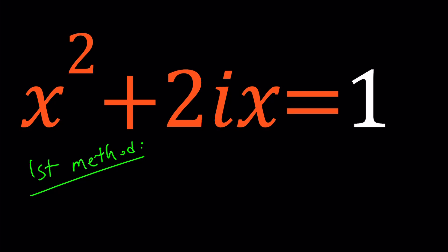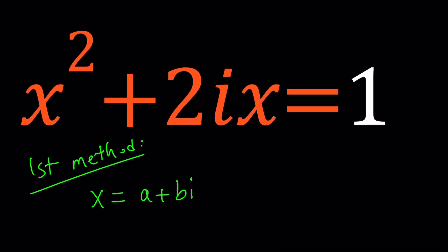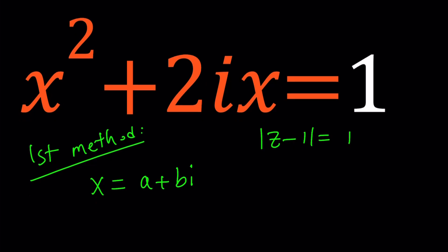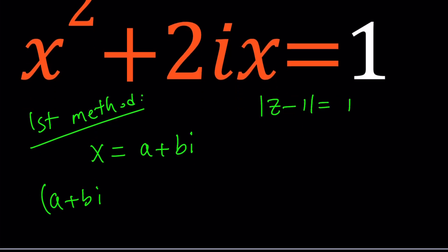That's why I'm going to assume that it takes the form a plus bi because that's how you write a complex number, right? Great. So now we're going to replace x with a plus bi, and this is a general technique actually that's used for solving equations for complex numbers. Sometimes you're going to get equations like the absolute value of z minus 1 equals 1. You know, stuff like this you can easily solve it by replacing the z or x with a plus bi, which is the general form of a complex number. So now let's go ahead and do the replacements: a plus bi squared plus 2i times a plus bi equals 1.